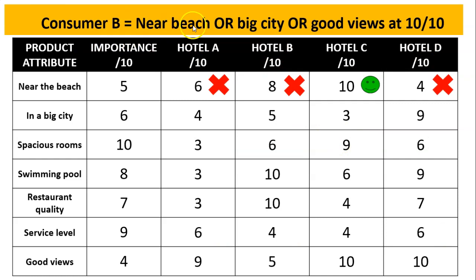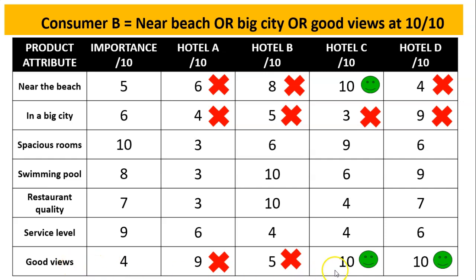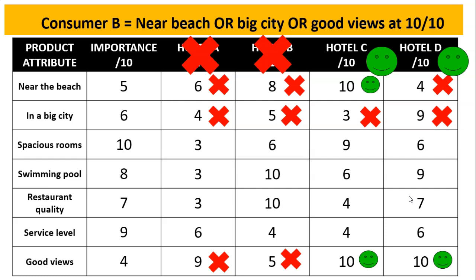Now let's look at consumer B — they're after those three attributes. The first one, near the beach, 10 out of 10. Remember, this consumer wants perfect scores of 10. Big city: a 9 is not good enough for this consumer in this occasion. But then we have good views — 10 and 10 — we've got two hotels listed. That means in this case, using this particular rule, either hotel C or hotel D is an acceptable choice. Most likely they'll go for hotel D, but the way this works is we're trying to limit the choice down to hotels that perform really well on one particular attribute. Both hotels have great views, and hotel C also has near the beach, but we'd rule out A and B and are now down to hotel C and D.